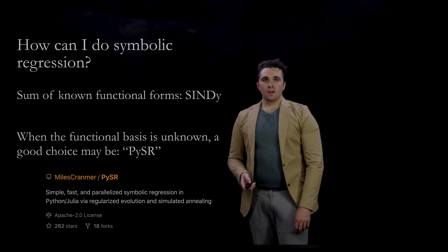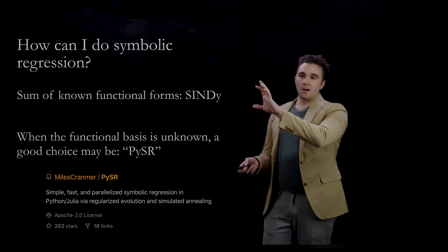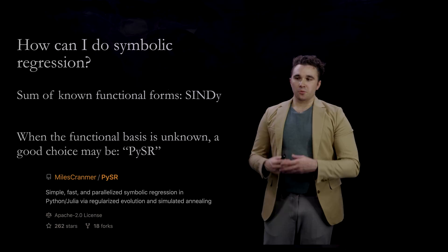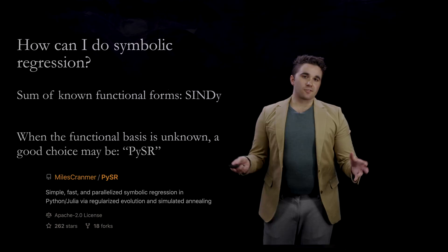How can you actually do symbolic regression in practice? If you know your equation is going to be a sum of known functional forms, SINDy is a faster approach — it finds a sparse set of coefficients in front of a basis set of functional forms. When you don't know your functional basis or think it could be a very nested, nasty expression, PySR using genetic algorithms is a good choice.